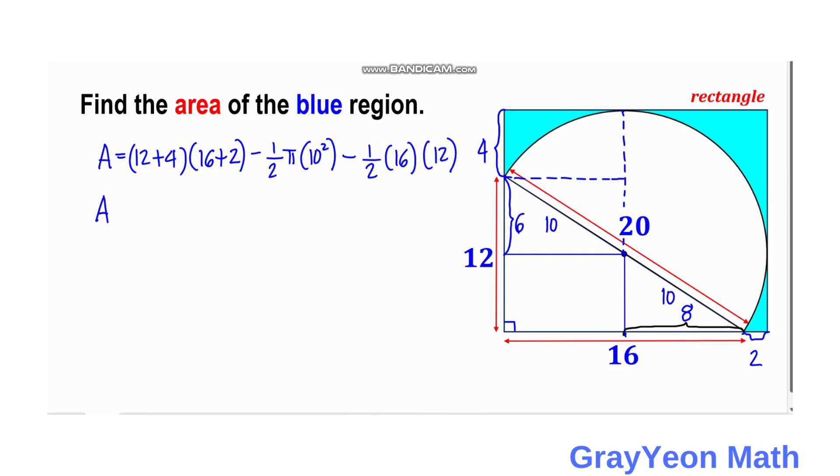Simplifying further we have 16 times 18 minus 50π minus 96. Then we have 16 times 18 equals 288 minus 96 minus 50π, and 288 minus 96 is equal to 192 minus 50π square units, and that is our answer.